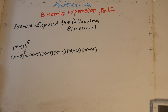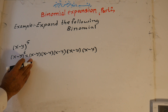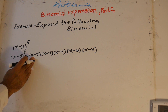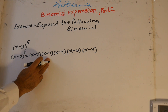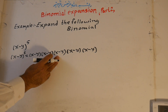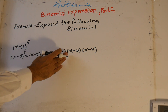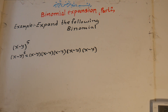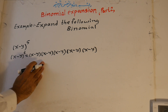That means x minus y, times x minus y, times x minus y, times x minus y, times x minus y. It takes a long time to multiply this — first, it may take more than 20 minutes, and secondly, during the multiplication there may occur a lot of mistakes.